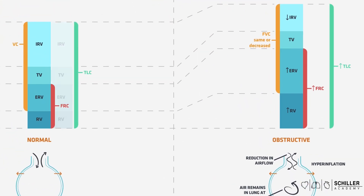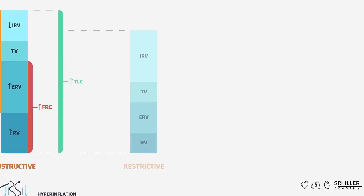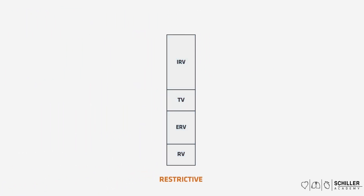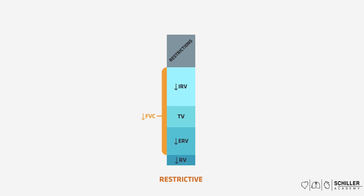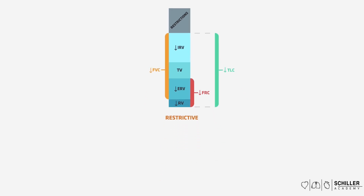Finally, let's look at restrictive lung diseases. These conditions include, for example, pulmonary fibrosis or sarcoidosis. In restrictive lung diseases, lung compliance is impaired. The tidal volume remains the same, but the inspiratory reserve volume, the expiratory reserve volume, and also the residual volume are reduced. Thus, the forced vital capacity is reduced, the functional residual capacity is also reduced, and the total lung capacity is reduced too. The lungs become stiffer, and this stiffness leads to reduced lung volumes and lung capacities.